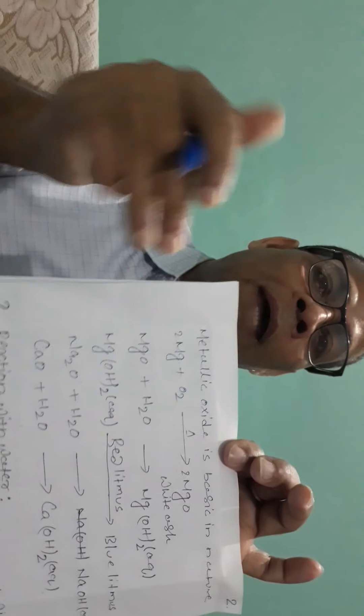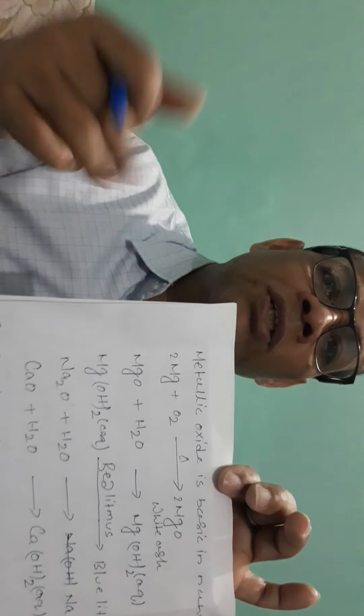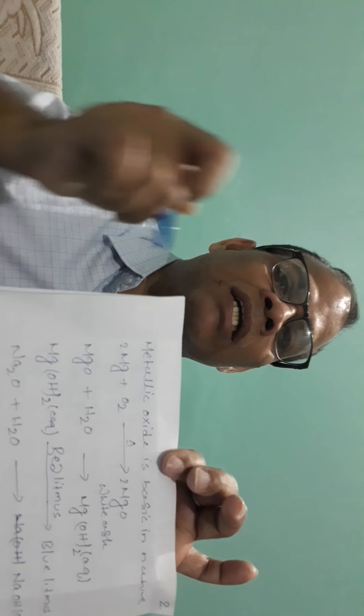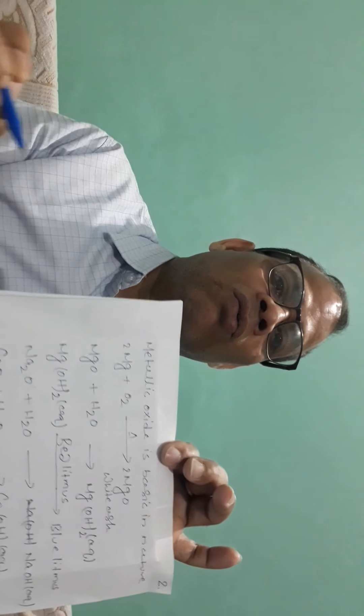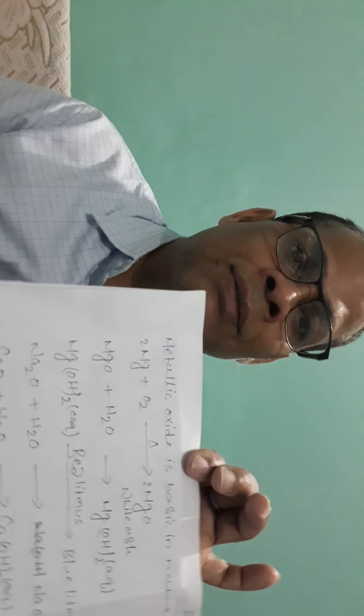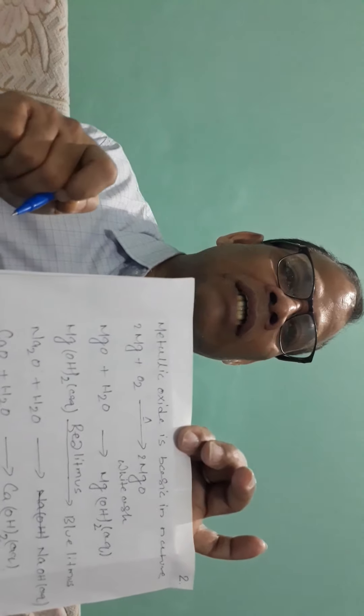Some metallic oxides are amphoteric in nature. An amphoteric oxide is a metallic oxide that behaves as acidic as well as basic under certain conditions. Examples are aluminium oxide and zinc oxide. Aluminium oxide reacts with acid to form salt and water — here it behaves as a base. When aluminium oxide reacts with sodium hydroxide, it forms sodium aluminate and water — here it behaves as an acid.